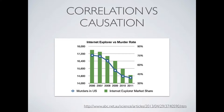Another thing to be aware of is confusing correlation and causation. Here's a graph where the blue line is the number of murders in the United States and the green bars are Internet Explorer's market share — and they follow exactly the same shape. We could say Internet Explorer was causing murder, and if we stamp it out entirely we'd have zero murders. Clearly that's not the case. You can tell silly stories with data just as easily as meaningful ones, so be aware of that.